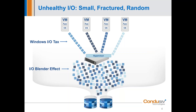We call the performance penalty caused by split IO situations the Windows IO tax. In a virtualized environment, this performance penalty can be amplified by something called the IO Blender effect. Small fractured IO packets coming from virtual machines get funneled through the hypervisor, which mixes these IO streams together, causing a randomization effect. What comes out between the physical host hypervisor and the disk storage controller is a chaotic mess of small fractured and very randomized IO streams that by the time they hit the storage controller couldn't be less storage-friendly, resulting in many more storage-level operations.